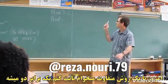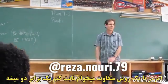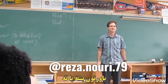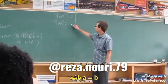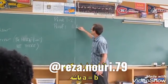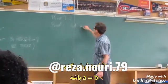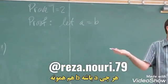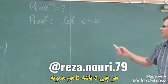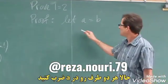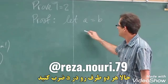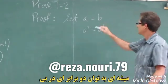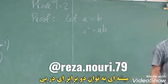Today I'm going to prove by a different method that 1 equals 2 — believe it or not. So, let A equal B. Whatever A is, B is the same. Then multiply both sides by A. You get A squared equals AB.